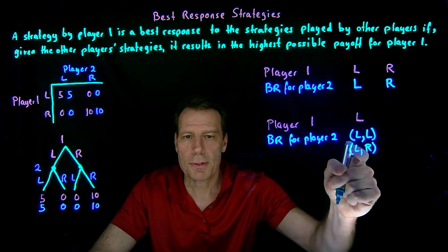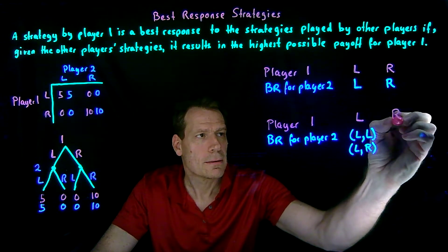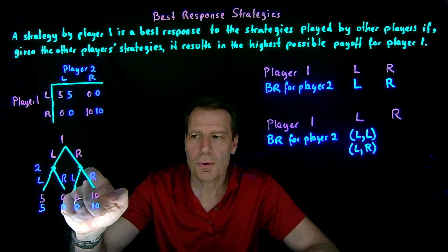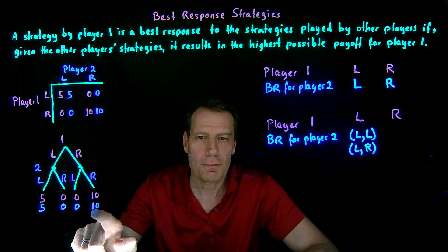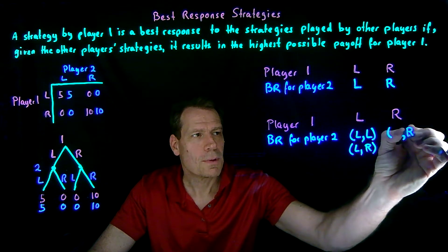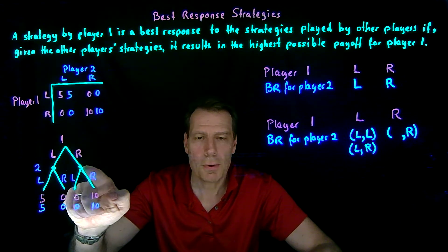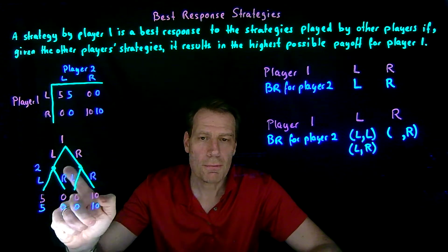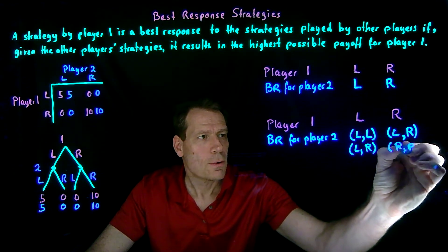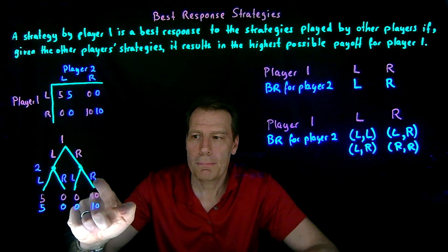So there are two best responses for player 2 to the strategy of left for player 1: she could say 'I'll always play left,' or 'I'll go left from the first node and right from the second node.' In either case she ends up with the payoff of 5 rather than 0. What if player 1 plays right? If player 2 knows that, it's really important that she plans to go right from the second node, getting a payoff of 10 rather than 0. Since she'll never reach the first node, both left-right and right-right would be best responses for player 2.